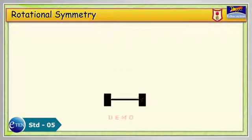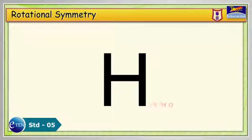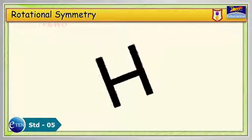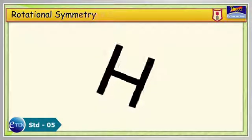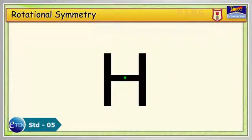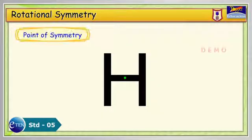An object has rotational symmetry if it looks unchanged after being turned, rotated by some specific amount less than a full 360-degree spin. The center point of the spin is called point of symmetry of the rotation.